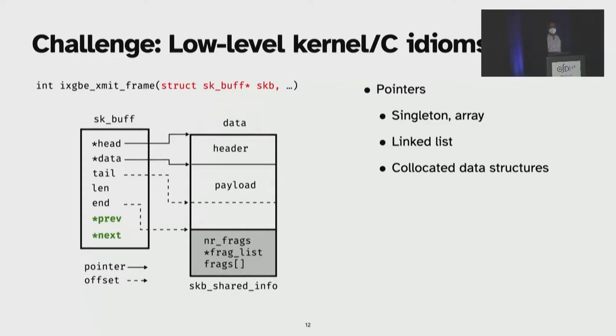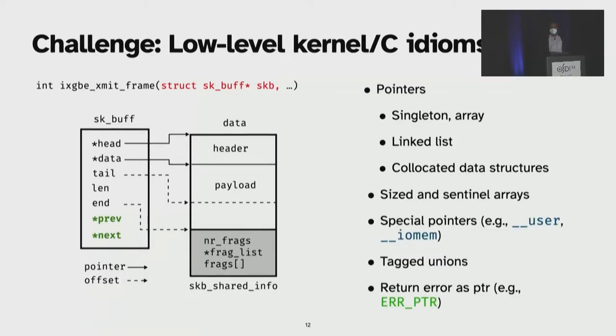Also, in order to infer the marshaling requirements for such a pointer, we should determine what kind of pointer it is when it is passed across an isolation boundary. Here, the SKB is a pointer, but it could be a singleton or an array, or it contains previous and next pointers of the same data type. So it could be a recursive data structure or it could be tied together on a linked list. And SKB, by default, has this co-located data structure, which is shaded in gray here. So we need to infer the pointer type to do the appropriate marshaling of this data structure. There are other types of low-level kernel idioms that we need to deal with as well. For example, sized and sentinel arrays, which are used in PCI registration, special pointers for user space pointer and IO memory, tagged unions, returning error as a pointer, and more.